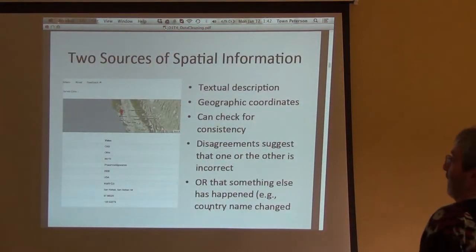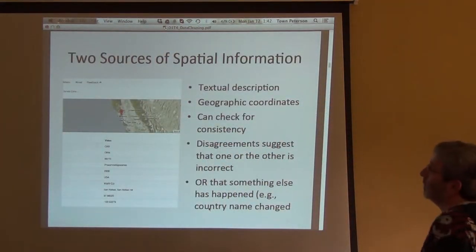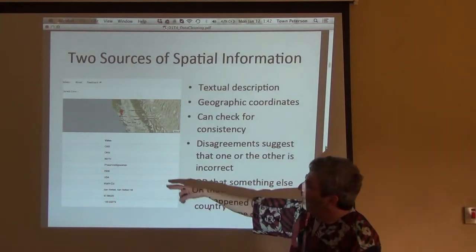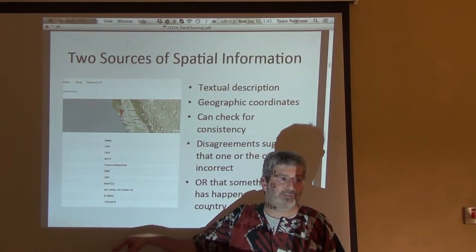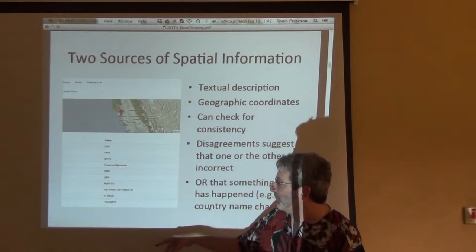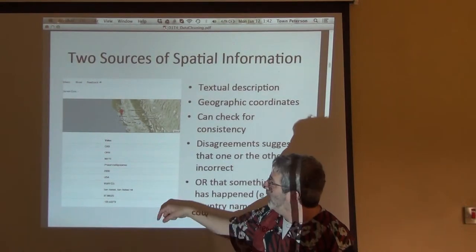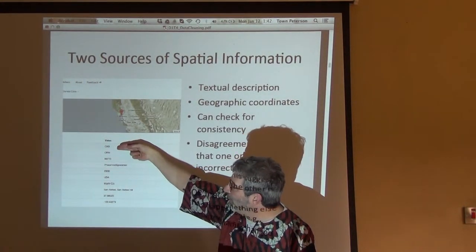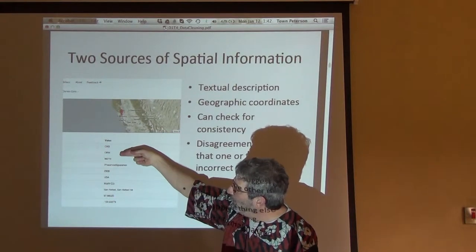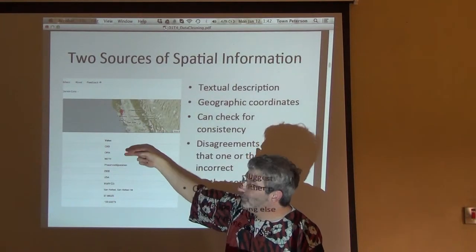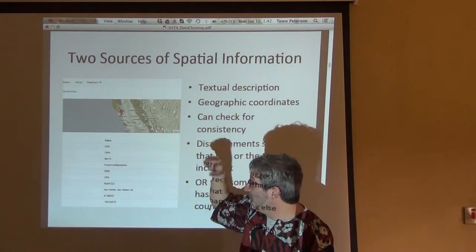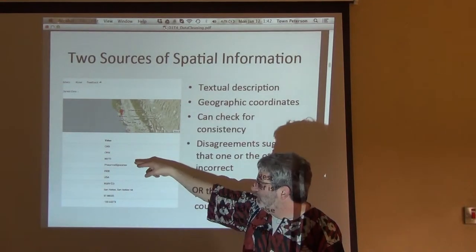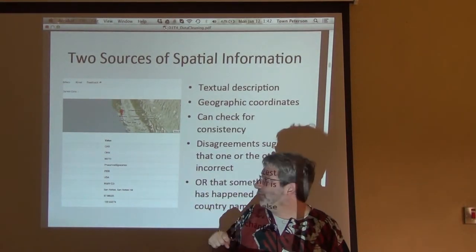This is an example of internal consistency. Here is a data record associated with a specimen. You can see it's from the California Academy of Sciences. It's a bird. Its catalog number is 96,773. It's documented by a preserved specimen.